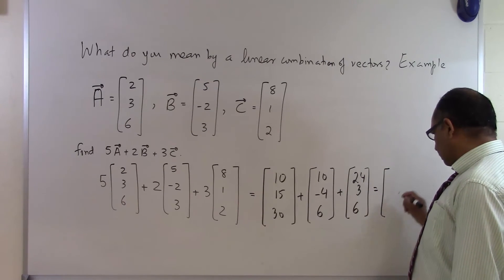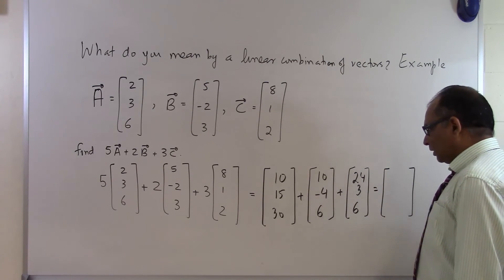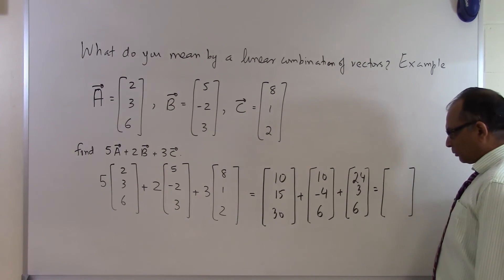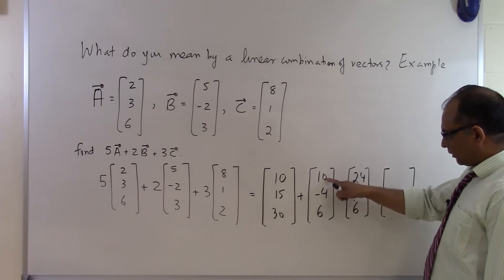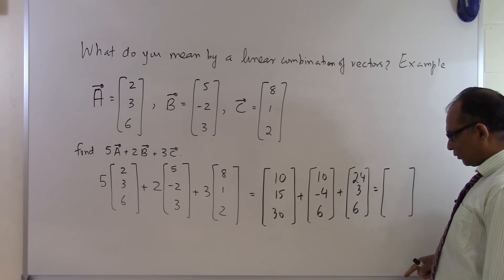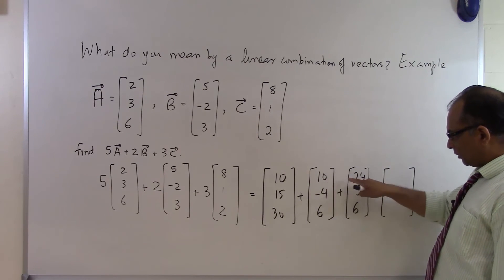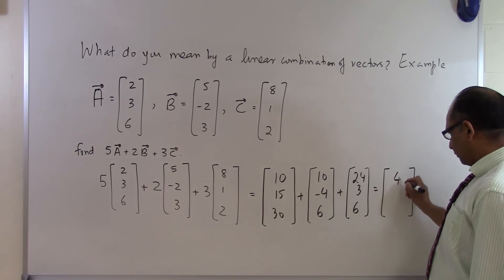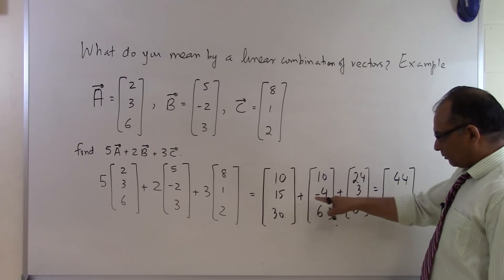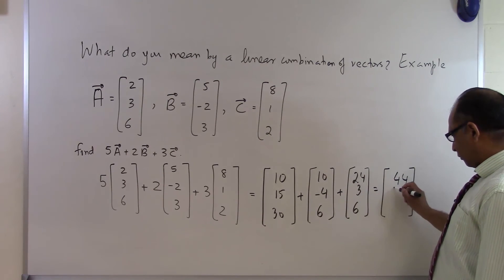And now what we're going to do is we have to add each of the components correspondingly. So first element here, first element here, first element here and so on and so forth. So first element here, 10 plus 10 plus 24 is 44. 15 minus 4 is 11, 11 plus 3 is 14.